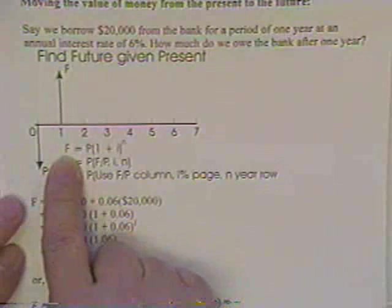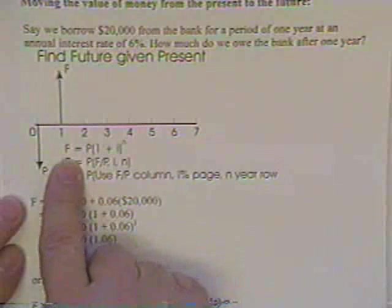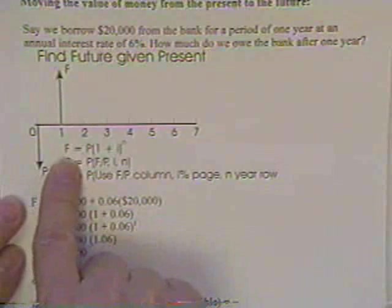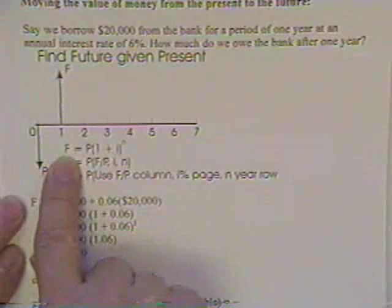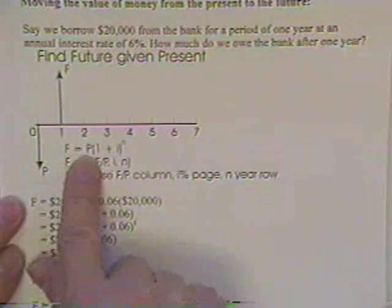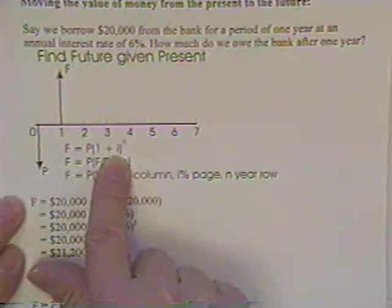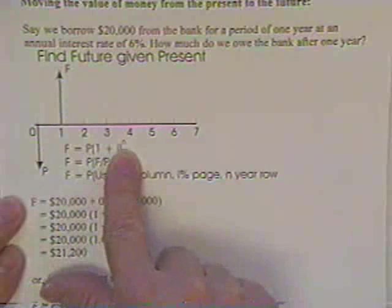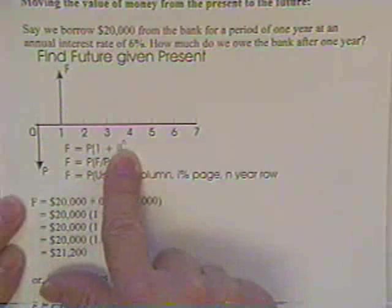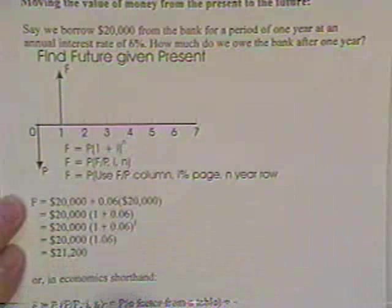And the equation for such use of money is that the future value is equal to the present value times 1 plus the interest rate raised to the number of compounding periods, or in this case, the number of years that you wish to borrow the money.